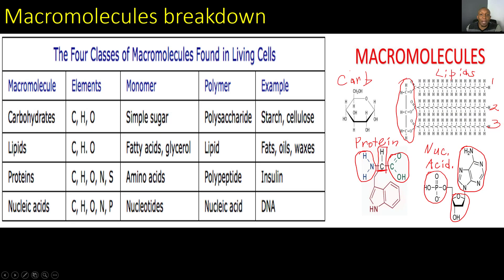Now it's time for our macromolecules breakdown. Starting with carbohydrates: they're made of the elements carbon, hydrogen, and oxygen. The monomer is a simple sugar or monosaccharide, and the polymer is a polysaccharide. Some examples of carbohydrates are starch and cellulose. Here's the structure of a carbohydrate.